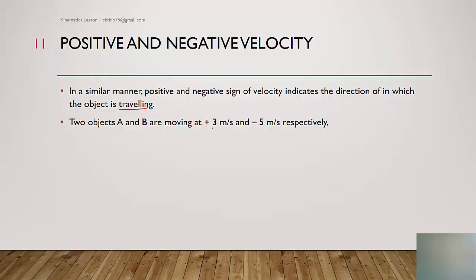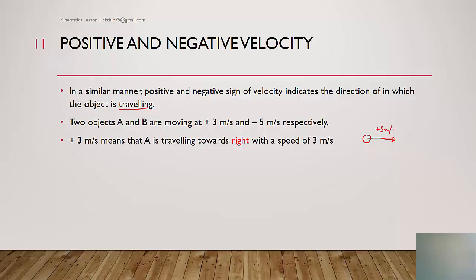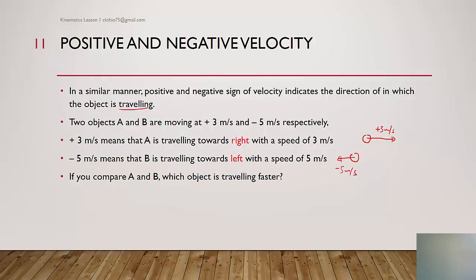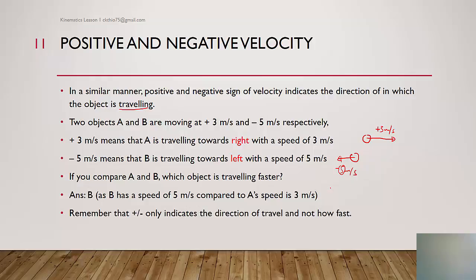Similarly, the positive and negative sign of velocity indicates the direction of travel. If object A is traveling at plus 3 meters per second and object B at negative 5 meters per second, then A is traveling right and B is traveling left. Comparing A and B, object B is actually traveling faster — 5 meters per second is faster than 3 meters per second. Positive and negative only indicate direction of travel, not how fast the object is moving.